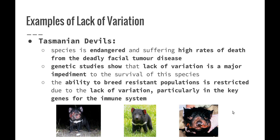What happens when we don't have variation within a species? At the moment, the Tasmanian devil is suffering and has become an endangered species. The cause of these high rates of death is a deadly facial tumour disease. Genetic studies show that the lack of variation between individual devils is a major impediment to its survival. The ability to breed resistant populations is restricted due to the lack of variation, particularly in key genes for the immune system. Specific breeding programs in captivity are finding devils with higher immunity to the disease and trying to breed them before releasing them back into the wild.